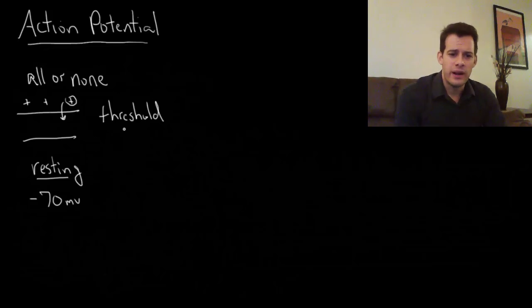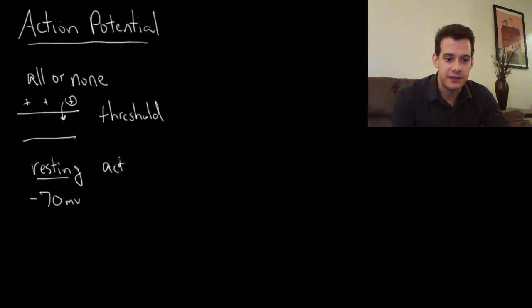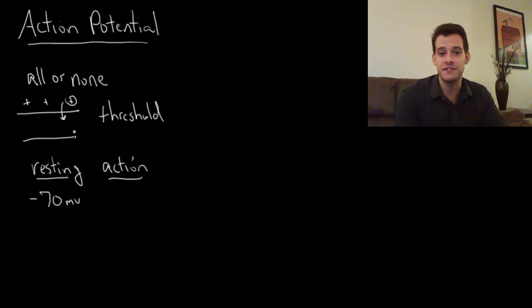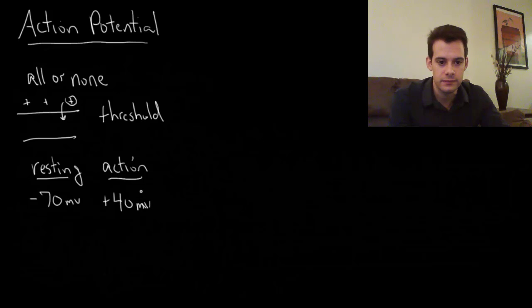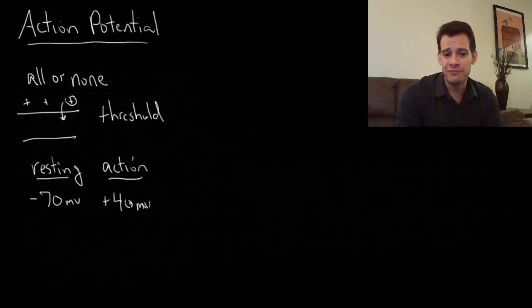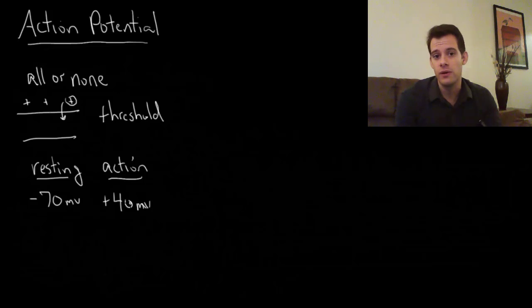When a neuron reaches its threshold and fires, this is going to change. During an action potential, the positive ions suddenly rush in — if enough of them move in, it triggers a bunch of channels to open all at once and positive ions rush inside the neuron, meaning its charge jumps temporarily all the way up to positive 40 millivolts. After these ions rush in, the neuron wants to get back to its resting potential, so it has pumps that push these ions back out and restore it to minus 70.